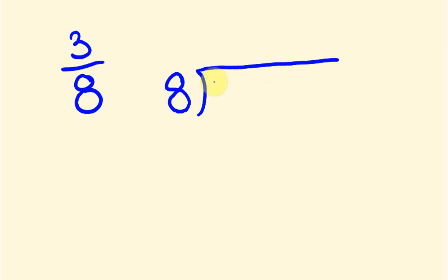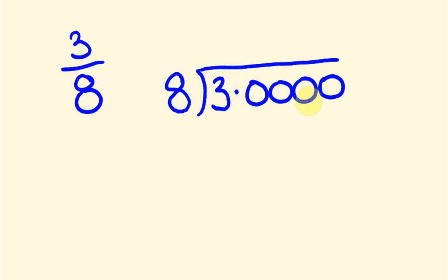We're going to work this out not using a calculator — we're going to work this out using a standard long division. So 8 is going into 3, and because this is going to be a decimal I'm going to end up putting a bunch of decimal places here that we can work with. So let's start this division. I'll put the decimal place up here where it's going to go. 8 into 3 we can't do, so I'll put a zero there.